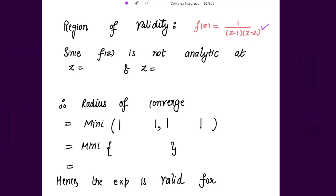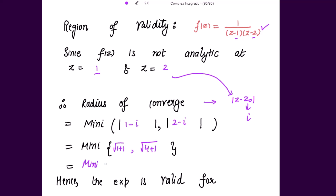To find the region of validity: the given function is not analytic at z = 1 and z = 2, since the function is not defined at these points. The radius of convergence is the minimum of the distances from the center z₀ = iota to the singular points. Taking z = 1: |1 - iota| = √(1² + 1²) = √2. Taking z = 2: |2 - iota| = √(4 + 1) = √5. The minimum is √2, so the expansion is valid for |z - iota| < √2.